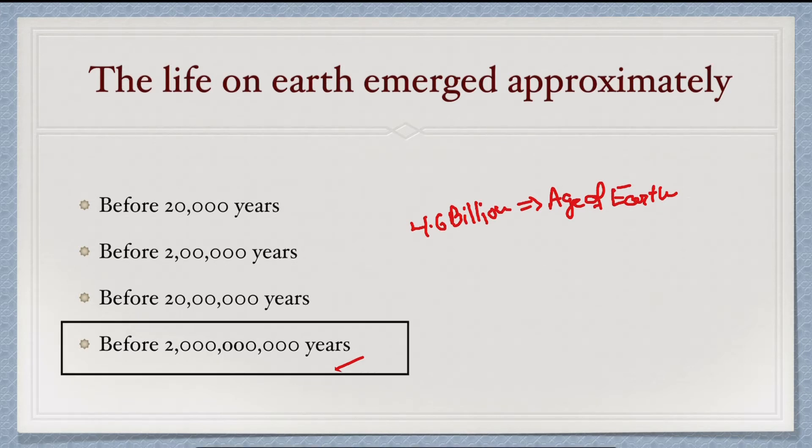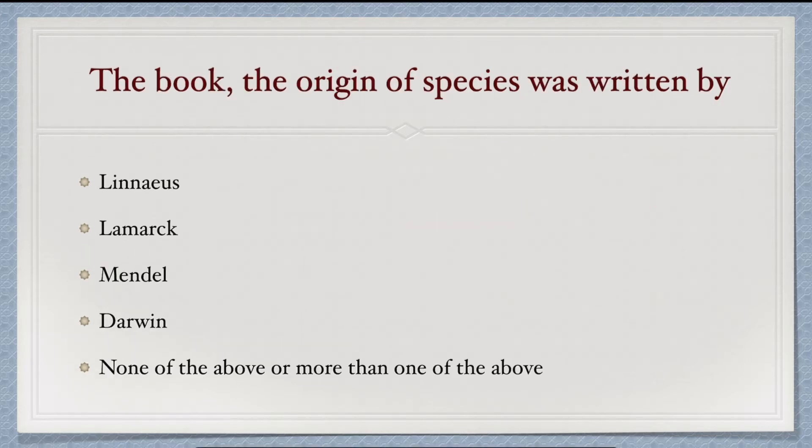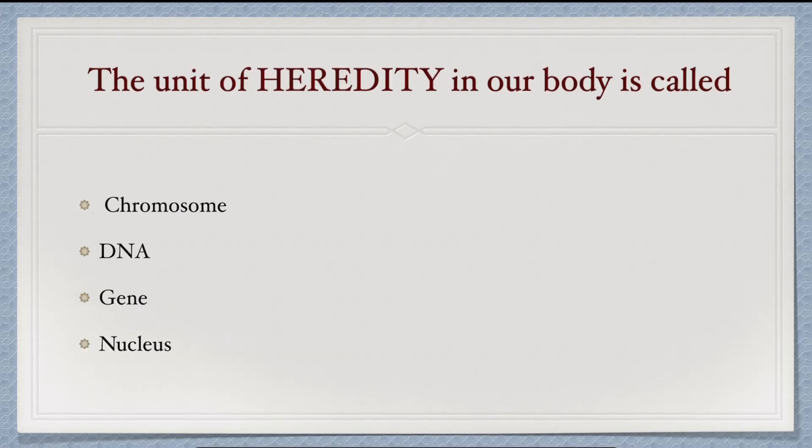Next question: the book The Origin of Species was written by Darwin, so option fourth is correct. Next question: the unit of heredity in our body is called what? A gene is the basic physical and functional unit of heredity, so option third, gene, will be the correct answer.